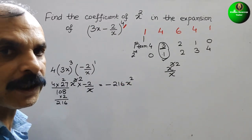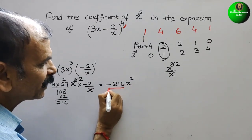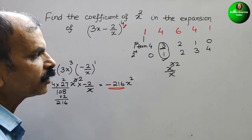Therefore our coefficient of x² is: minus 216. This is your answer for this power.